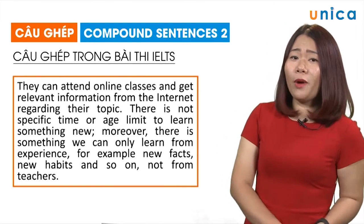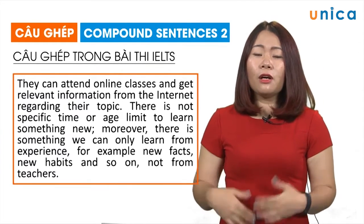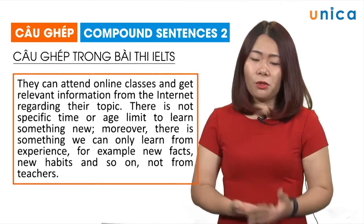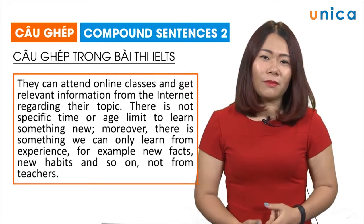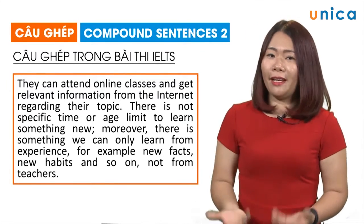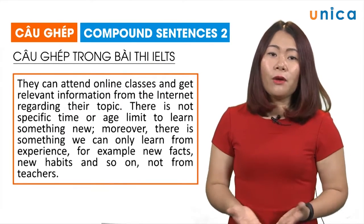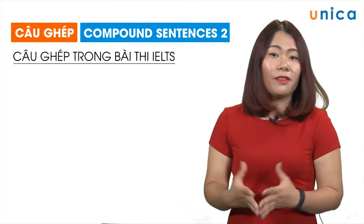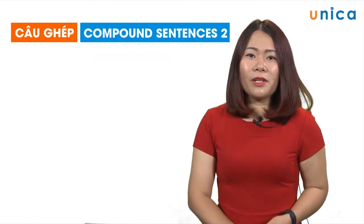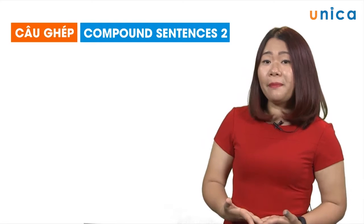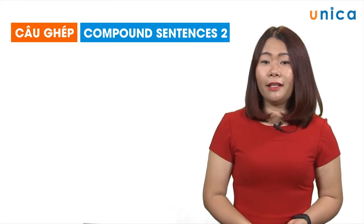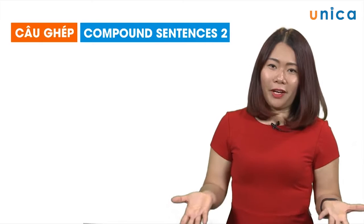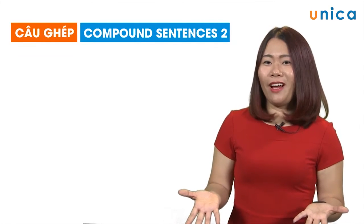Và các bạn cũng đừng quên rằng trong biểu điểm chấm của kỳ thi IELTS thì cohesion và coherence chính là hai tiêu chí không thể bỏ qua, vô cùng quan trọng để giúp cho bạn có được một số điểm cao. Cái mục đích của bài câu ghép này cũng là để giúp cho các bạn làm tăng hiệu quả cũng như là phát triển tính coherence và cohesion đó. Và các bạn hãy cố gắng áp dụng nhé. Sau khi nghe giải thích và ví dụ cụ thể về câu ghép trong bài thi IELTS, chắc chắn các bạn đã thấy được tầm quan trọng của việc hạn chế số lượng câu đơn bằng cách ghép chúng lại với nhau, cũng như là sử dụng các từ nối.